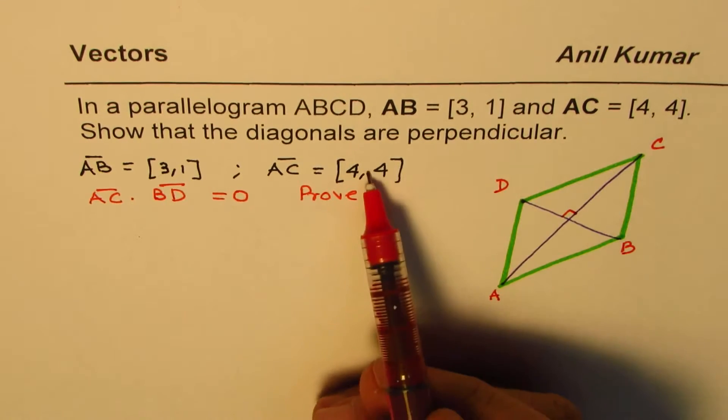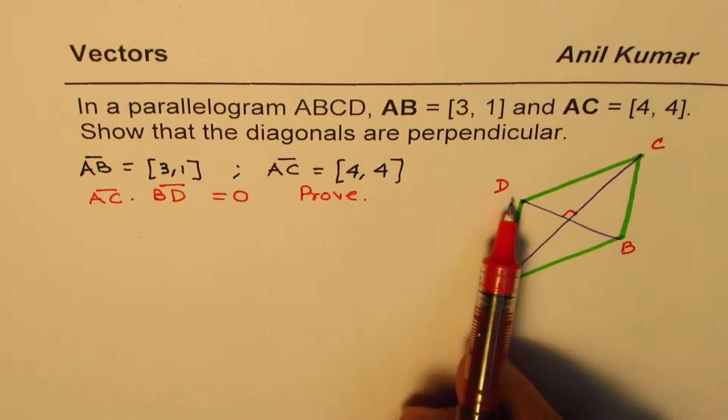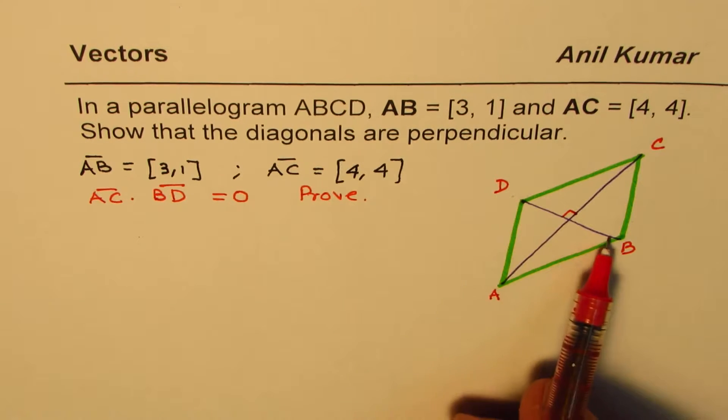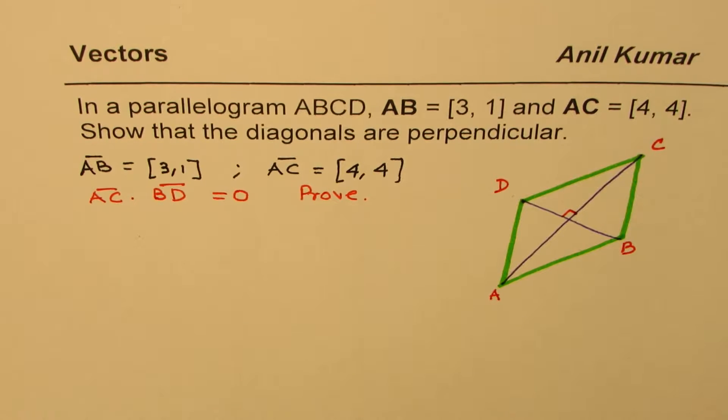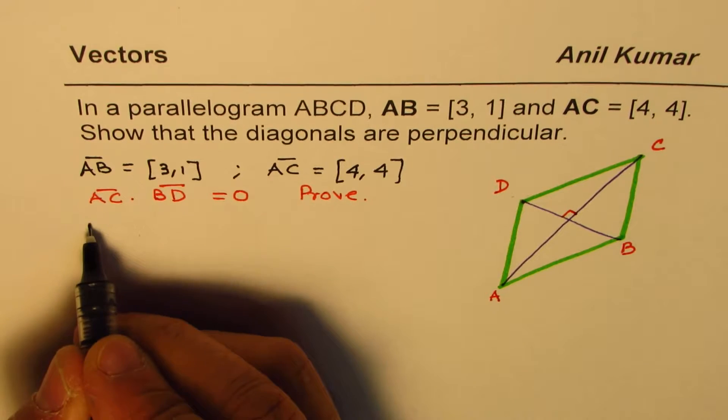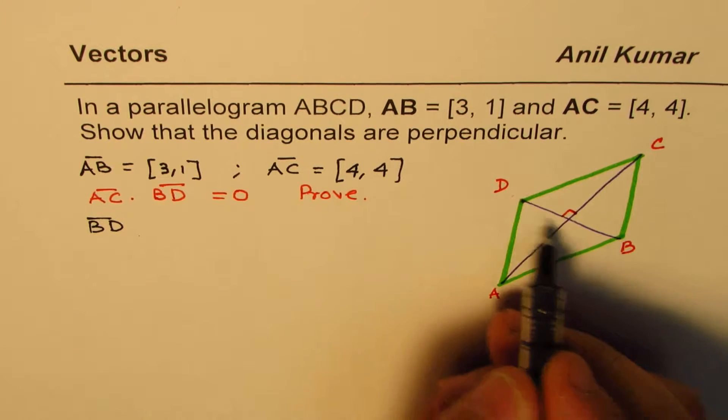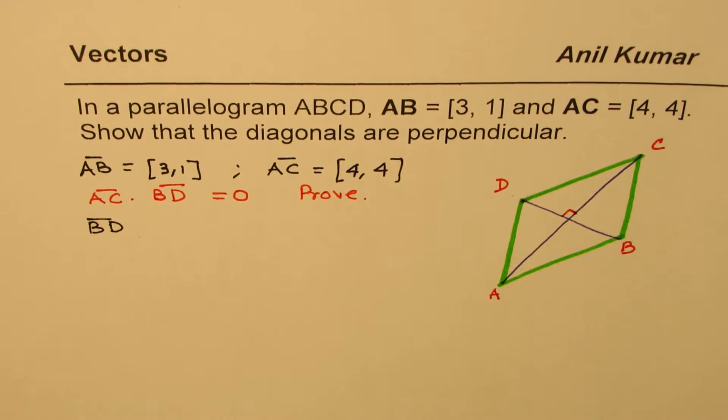Now, showing that these diagonals are perpendicular means that AC dot BD is equal to 0. This is what we need to prove. So we know what AC is, it is given to us. AB is given to us, but not BD. So we need to find what BD is. So let's begin by finding BD.